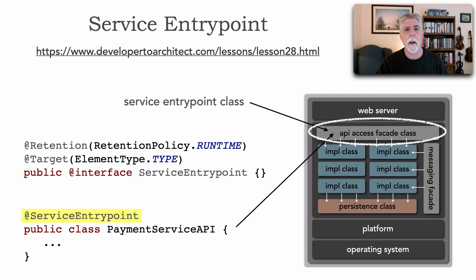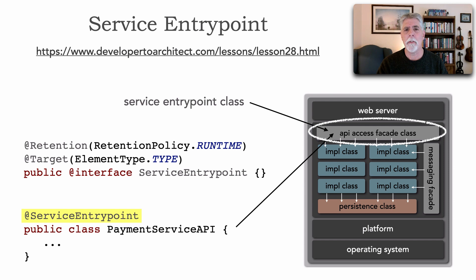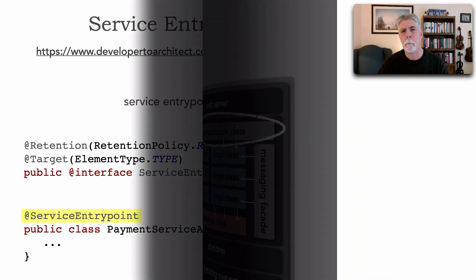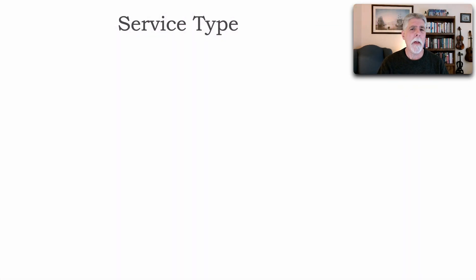In the rare case where you're using the direct access design from lesson 28, or you really don't have a definable entry point, in those cases I will create a class file that does nothing but is the same name as the service, and I'll denote that as the service entry point. You'll see the use of that when we look at other kinds of attributes.